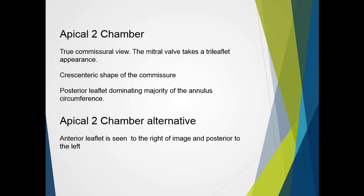There are two apical two-chamber views. There is the true commissure view, where both the posteromedial and anterolateral papillary muscles are seen. The mitral valve takes on a tri-leaflet appearance. We can observe the medial portion of the posterior leaflet, then the mid portion of the anterior leaflet, and then the lateral portion of the posterior leaflet again. This presentation is due to the crescentic shape of the commissure and the posterior leaflet dominating the majority of the annular circumference.